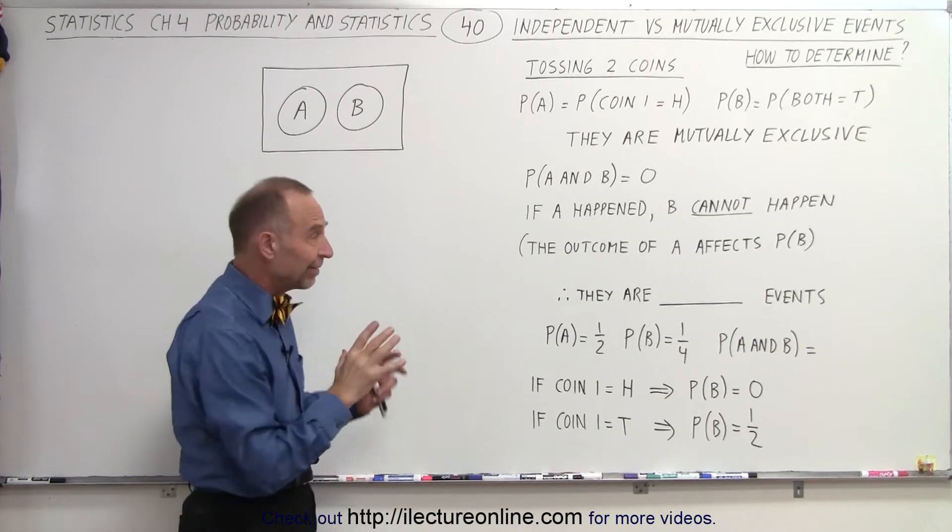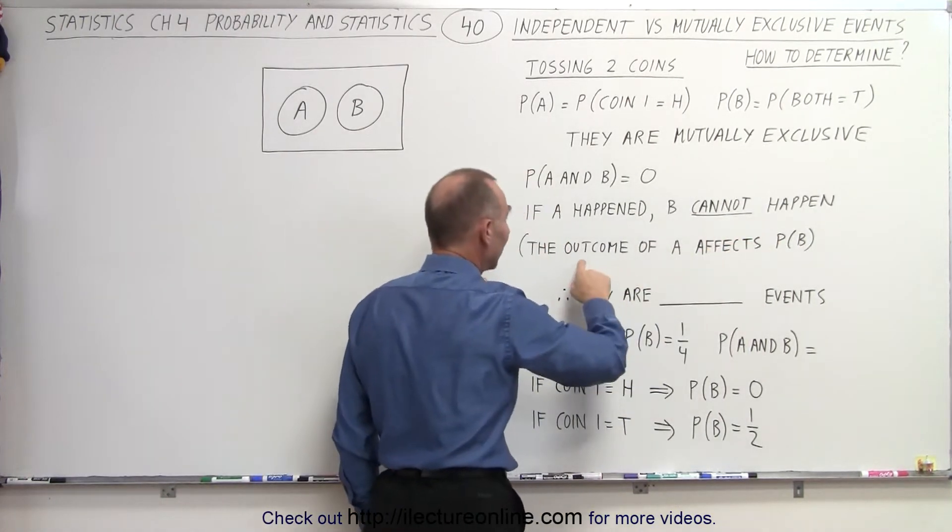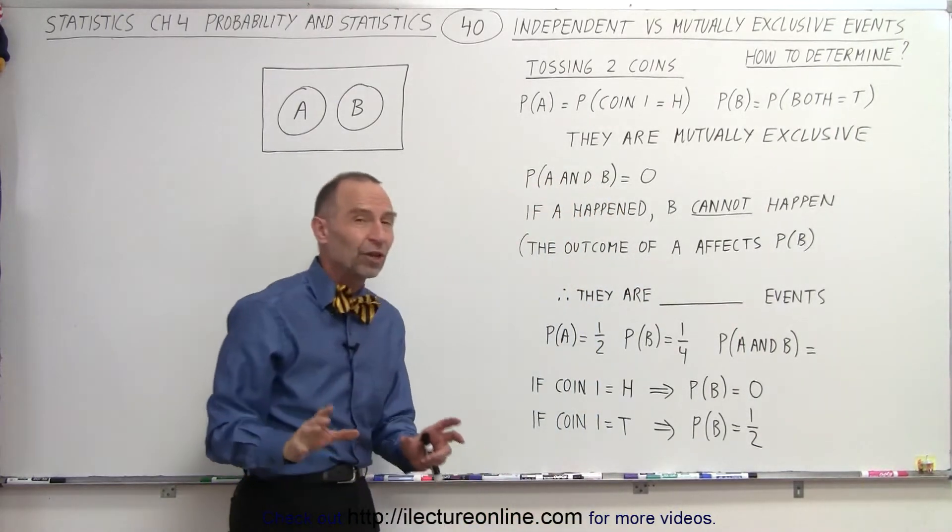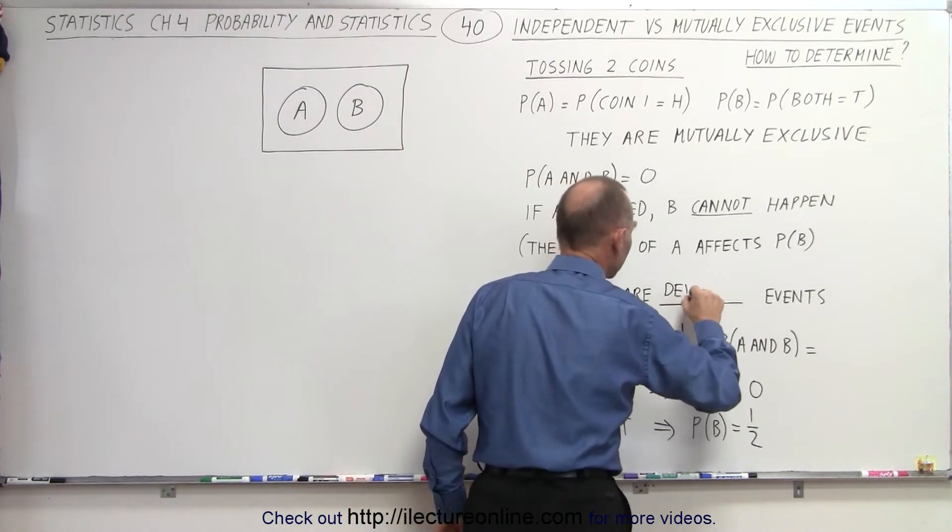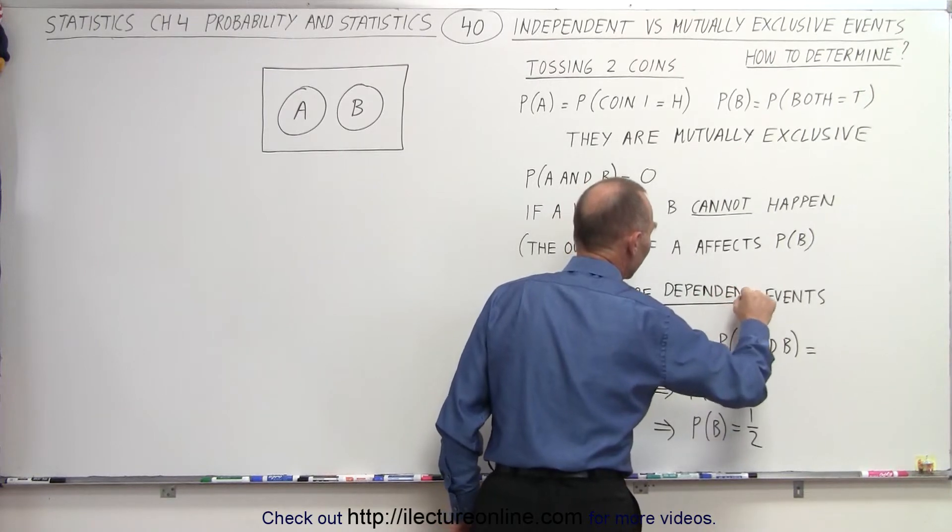Let's look at it a little bit more. But, anyway, if that's the case, if A happens and B cannot happen, and if the outcome of A affects the probability of B, then, of course, they are dependent events. So, we can already fill this in. We know they're going to be dependent. They cannot possibly be independent events.